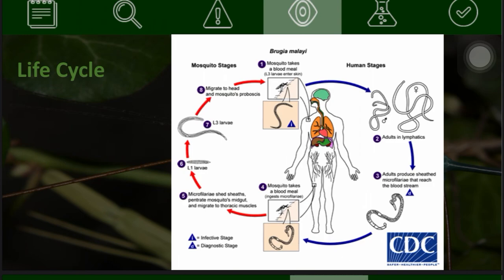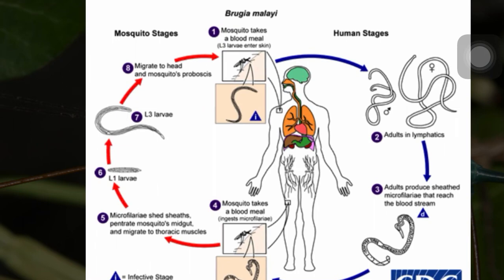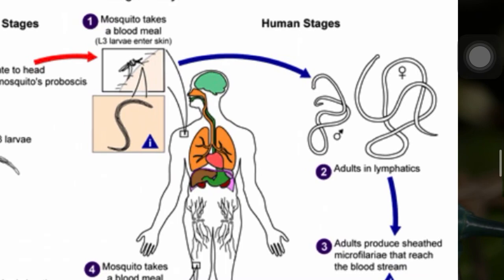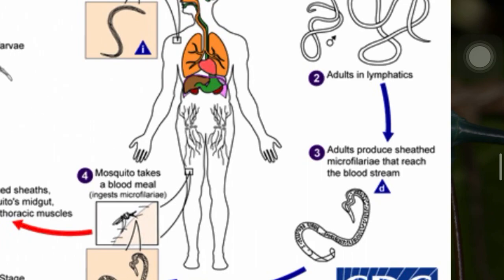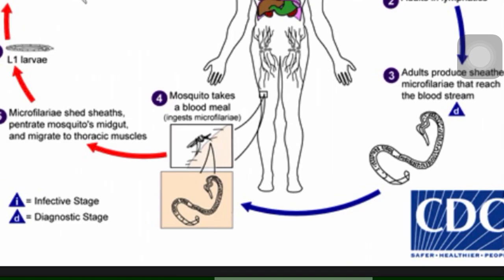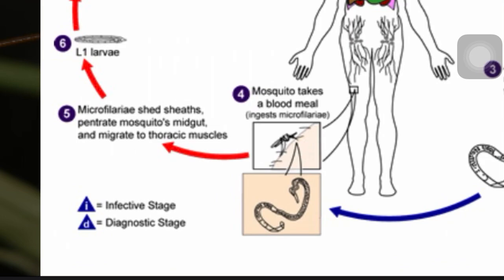The life cycle of Brugia malayi has two main stages: the human stage and the mosquito stage. First, the mosquito takes a blood meal from a human and injects larvae. The larvae develop into adults in the lymphatics. The adults then produce sheathed microfilariae that reach the bloodstream. The mosquito then takes another blood meal and ingests the microfilariae.